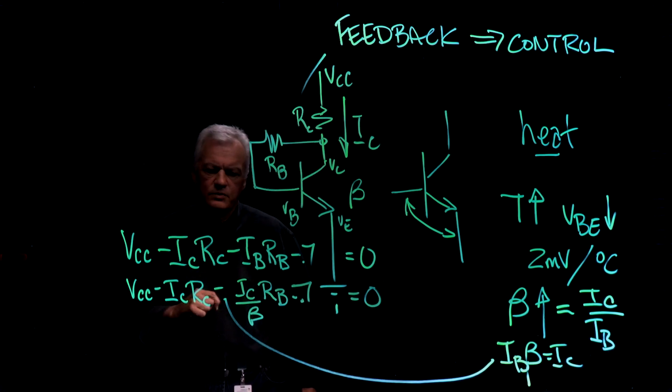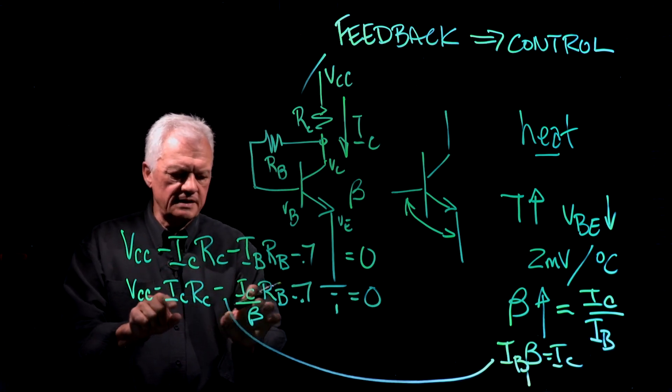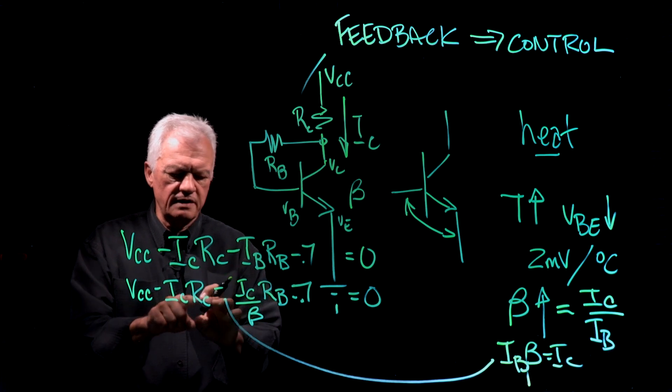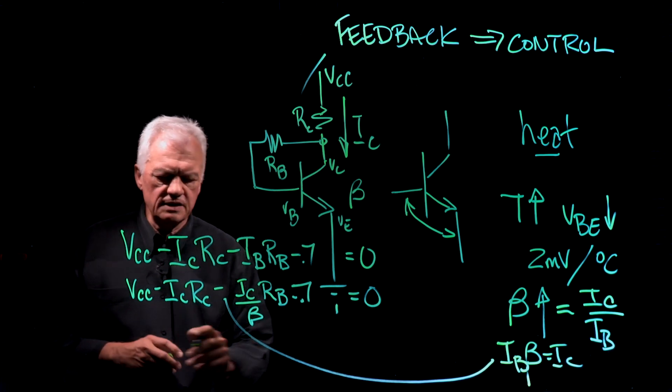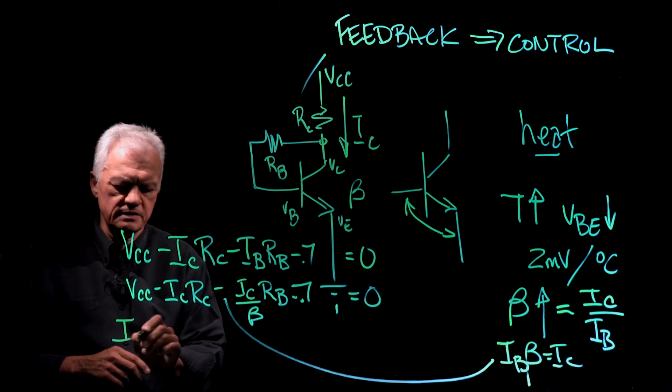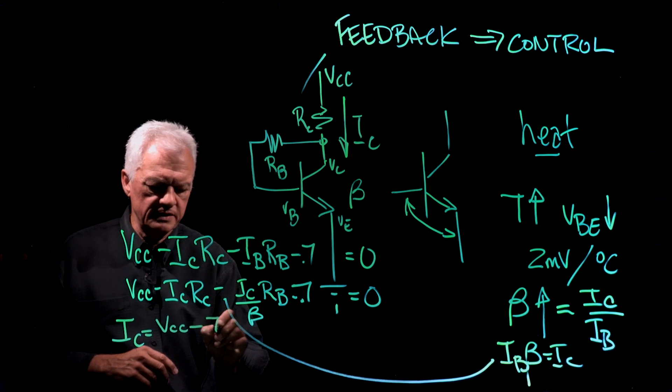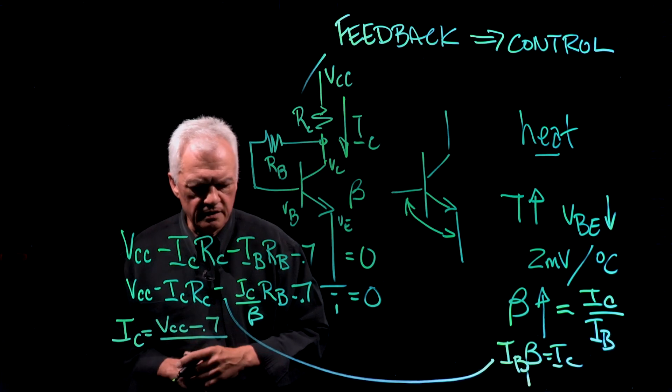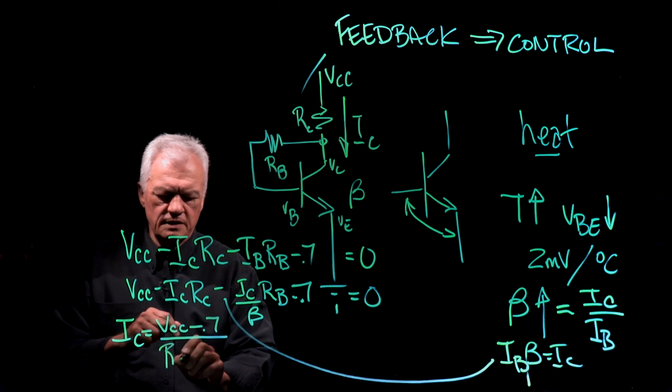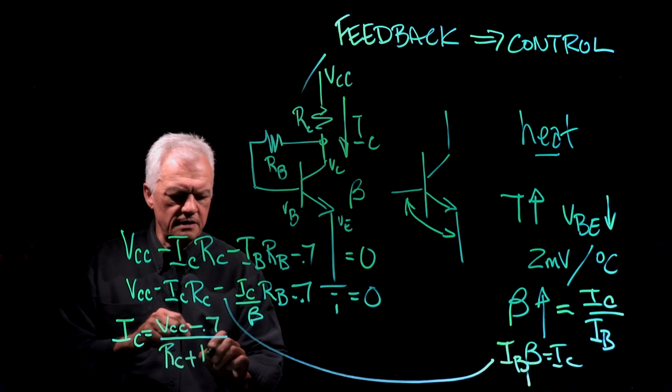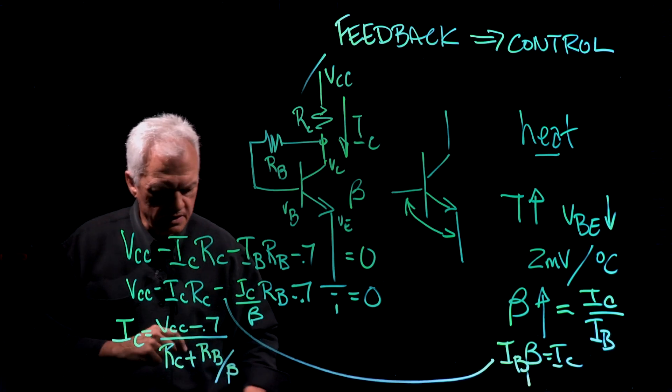So let's rearrange the terms. What we will have here is, so if we take IC out, then we would have RB over beta, RC, okay? Here we have VCC minus 0.7. So let's see what we can do. Let's rearrange the terms and you can do this. You'll have VCC minus 0.7 as your numerator. And here you will have RC plus RB over beta, okay?